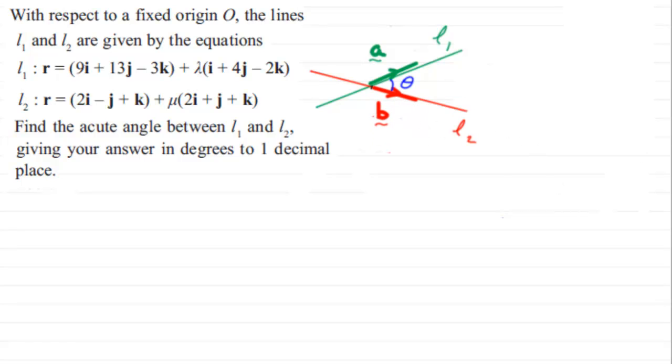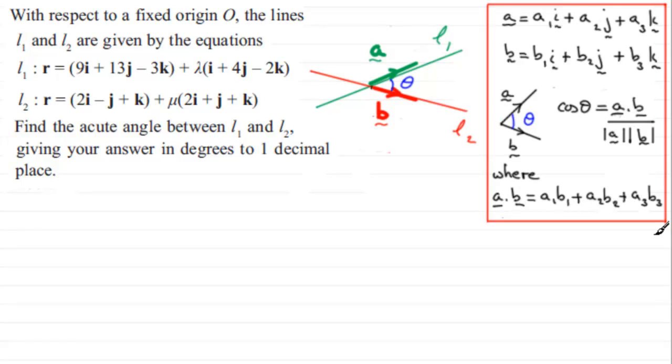And using these two vectors we can then go on to use this idea that if we've got two vectors A and B and we've got the components here, the angle theta between those two vectors is given by the cosine of theta equals A dot B over the magnitude of A magnitude of B where A dot B is defined as being this sum here.